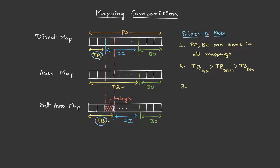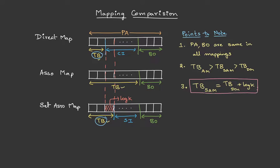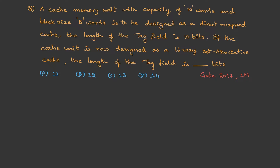Third, if we compare the tag bits of direct mapping and set associative mapping, we can make out that the tag bits of set associative mapping is actually the tag bits of direct mapping plus log k. This is an important observation — make a note of this.